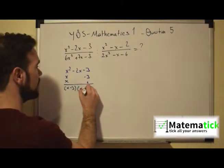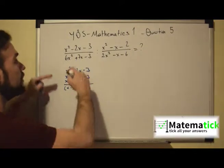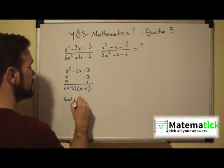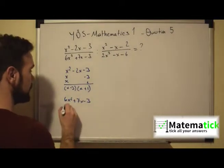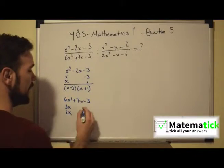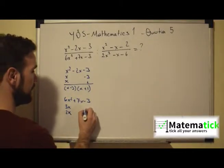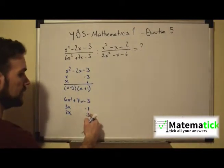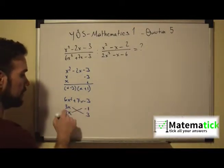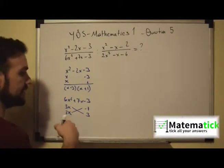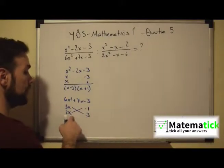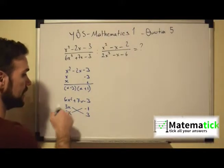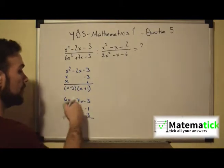So another way of writing x² - 2x - 3 is (x - 3)(x + 1). Now let's look at the denominator of the first fraction: 6x² + 7x - 3. We have 3x times 2x, and here we have -1 and 3. Because -1 times 3 gives us -3. We cross-multiply: 3x times 3 is 9x, and 2x times -1 is -2x, so 9x - 2x gives us 7x.